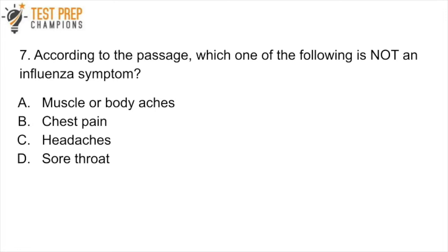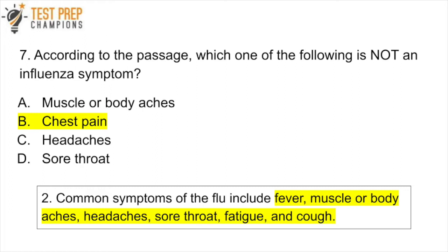Question 7: According to the passage, which one of the following is not an influenza symptom? A. Muscle or body aches? B. Chest pain? C. Headaches? Or D. Sore throat? Pause the video, refer to the passage, and try to figure this one out. The answer to question 7 is B. The passage lists common flu symptoms including fever, muscle or body aches, headaches, sore throat, fatigue, and cough. You need to find the part of the passage that listed the symptoms and use process of elimination to find that chest pain — choice B — is not one of those symptoms listed.